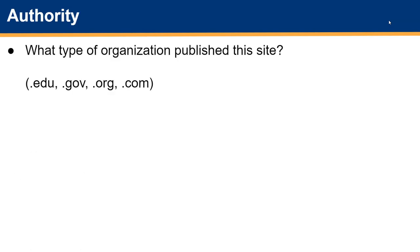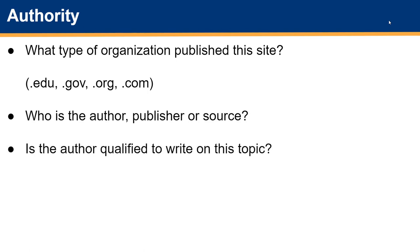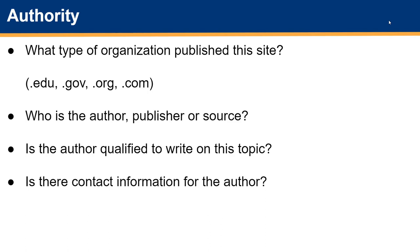For authority, you want to consider the URL and analyze what type of organization published the site — was it a .edu, .gov, .org, or .com? You want to look at who the author or publisher of the source is, consider whether the author is qualified to write on this topic, and check if there is contact information available for the author.